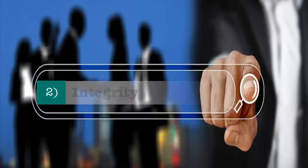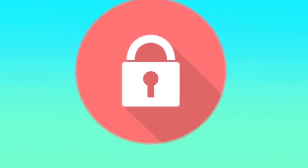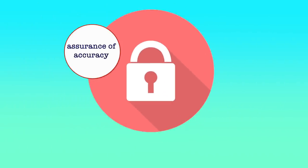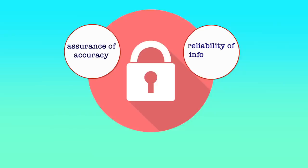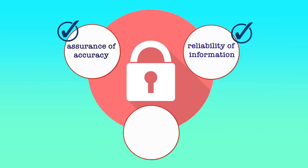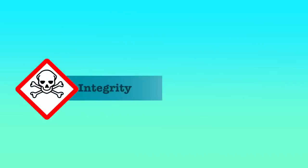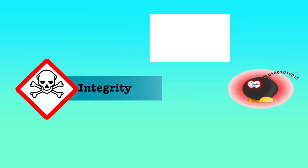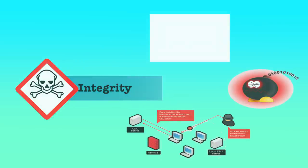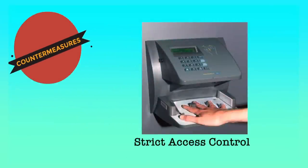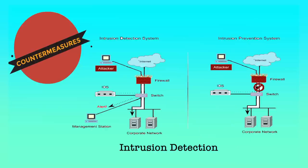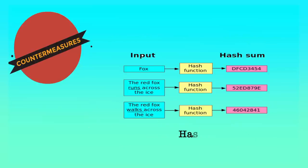The second security principle is integrity, which means the integrity of data is protected when the assurance of accuracy and reliability of information and systems is provided and unauthorized modification is prevented. Threat sources to integrity are viruses, logic bombs and backdoors. Countermeasures to address these threat sources are strict access control, intrusion detection and hashing.